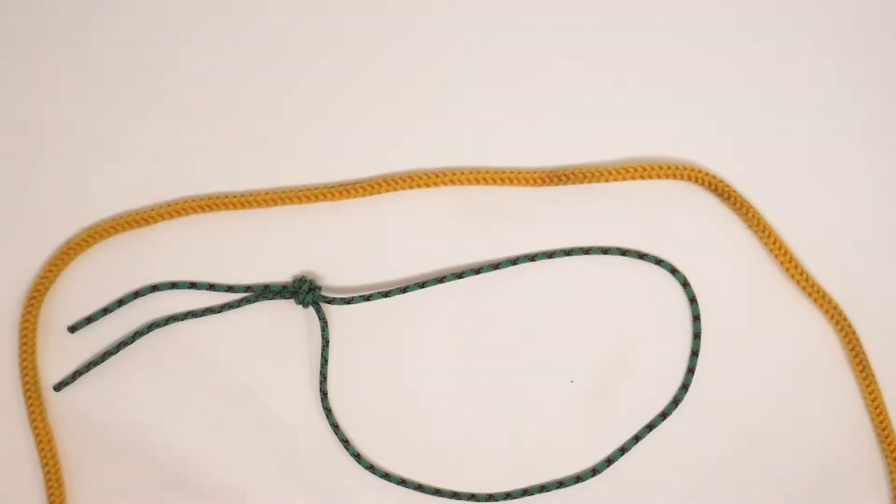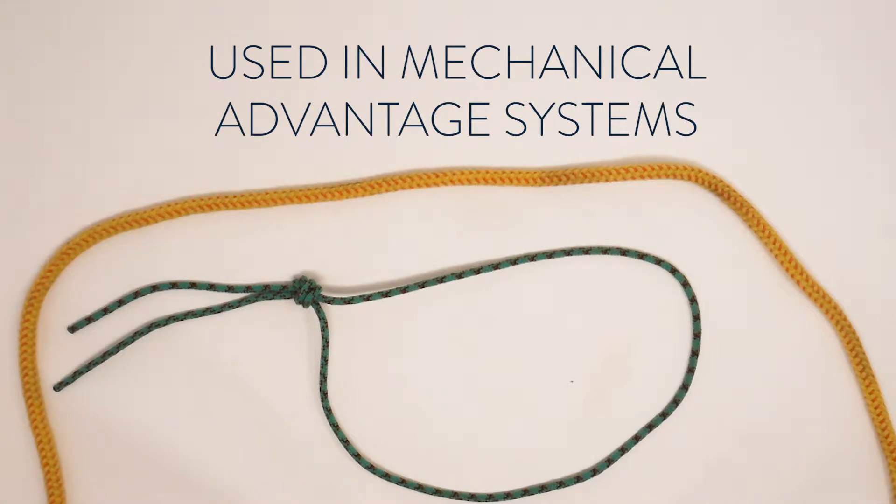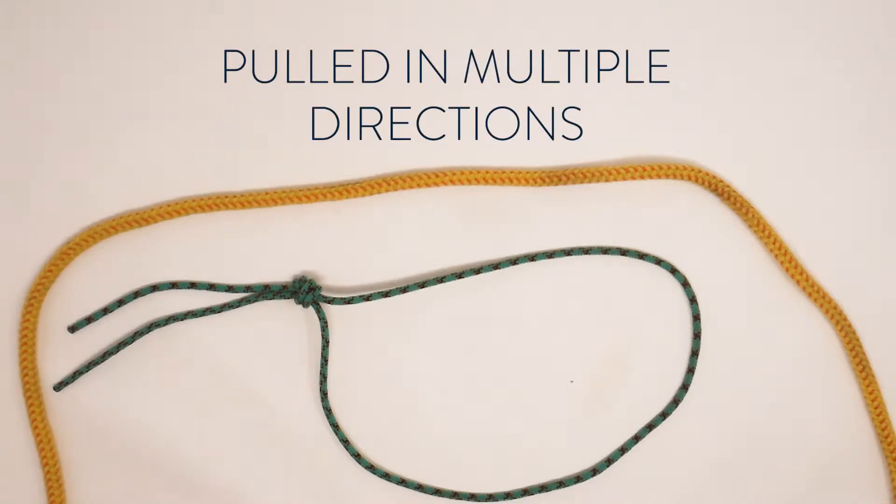The Prusik hitch is a friction hitch used in mechanical advantage systems and can be pulled in multiple directions.